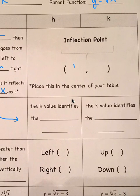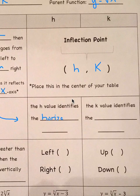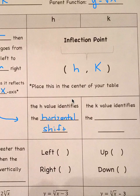Our inflection point is still at (h, k), and when we're making our table, this is the central point. H always identifies our horizontal shift, and k is our vertical shift — nothing different than any other function we've dealt with this year.